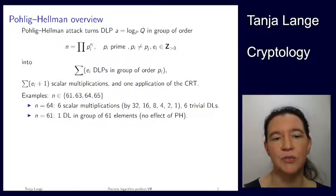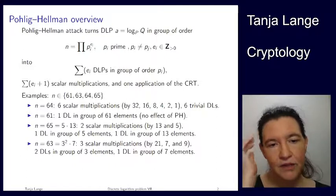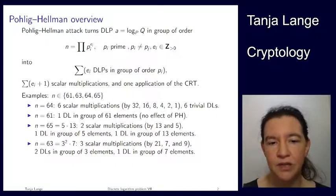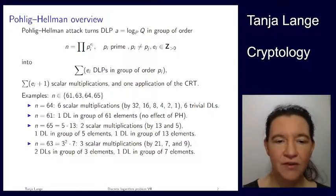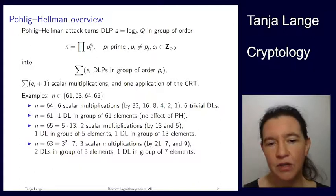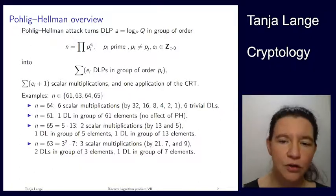The other two examples are chosen to be somewhere in the middle. So 65 being 5 times 13. So I didn't update this. So this is actually four scalar multiplications. So I have once by 13, once by 5, and then one discrete log in a group of five elements, one in a group of 13 elements.